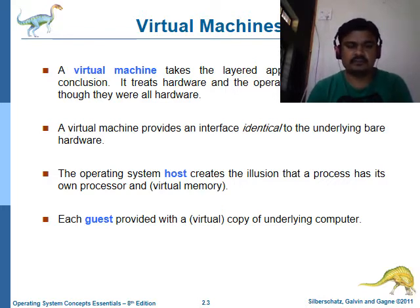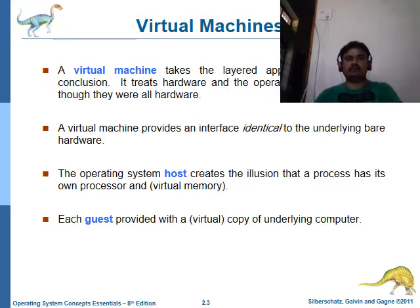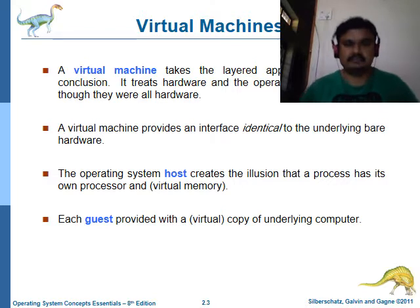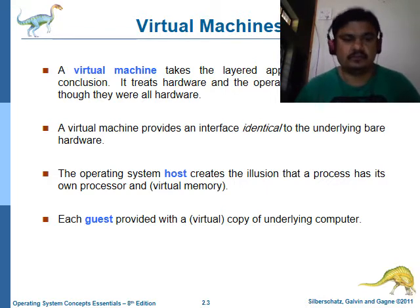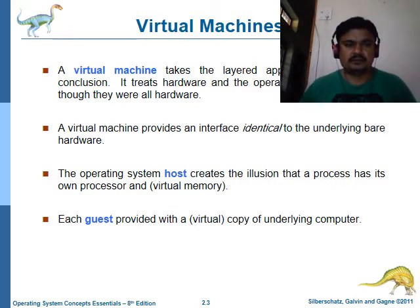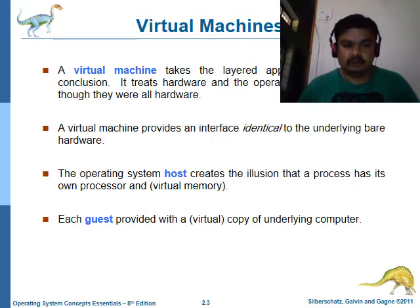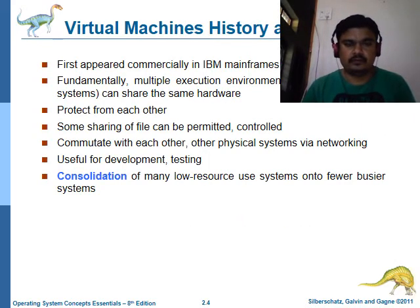Virtual machines provide an interface that makes us believe we are using something real, even though it is not physically there. The operating system creates an illusion that a process has its own processor, even though the CPU or memory is being shared. The guest operating system created above the host operating system gets a feel that it has its own independent virtual copy of the underlying host system resources.